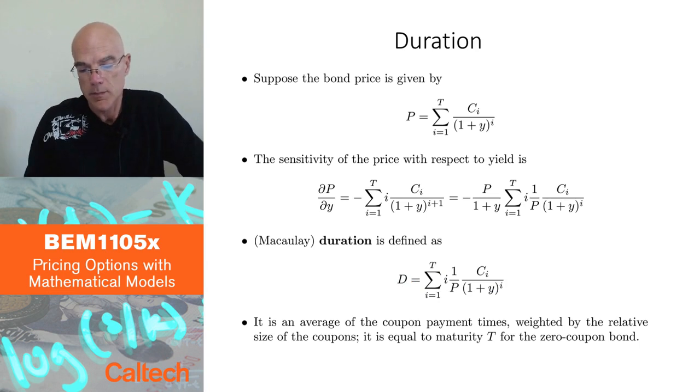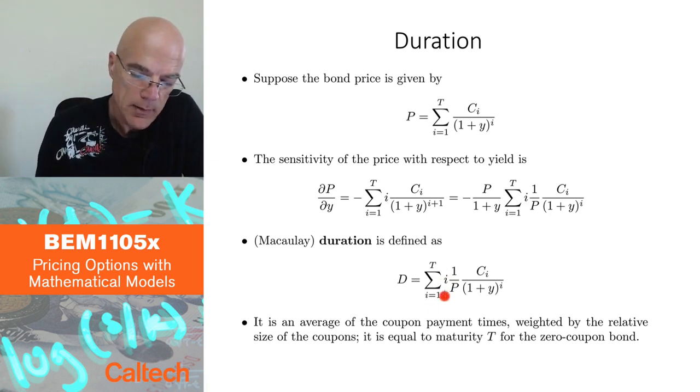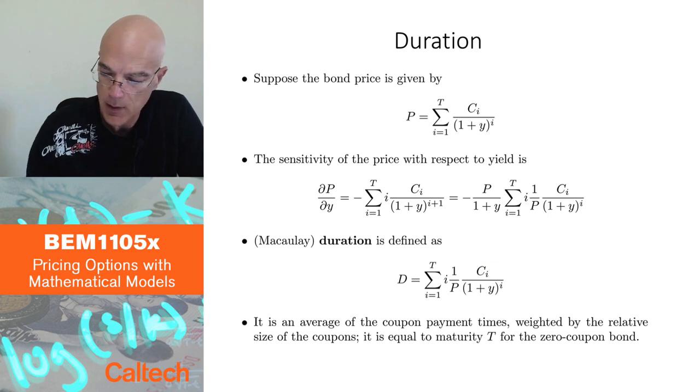So what it really is, it measures the sensitivity of the bond price with respect to the yield. But it has a different interpretation. Why is it called duration? It has to do something with time. If you look at it, you are really adding time, so payments which are i, multiplied by these factors here.